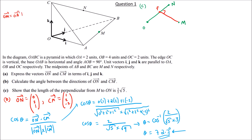Vector OM = OA + half(AB) = 2I + half(AO + OB) = 2I + half(−2I + 4J) = 2I − I + 2J = I + 2J. So M has coordinates (1, 2, 0).